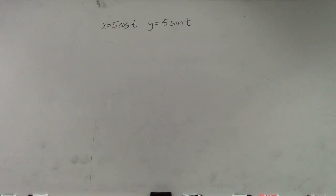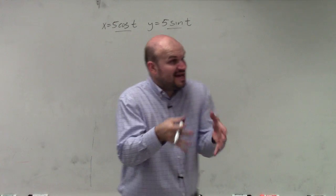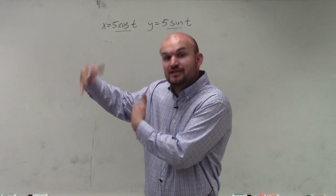What I want you guys to think about: if we're trying to eliminate the parameter, and you have this cosine and you have sine, we know that gives us a parametric equation of a circle.